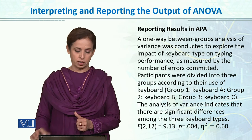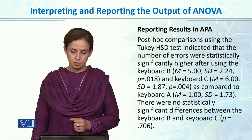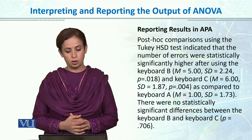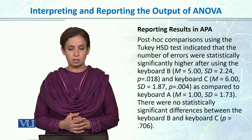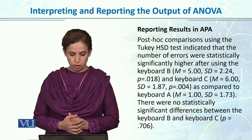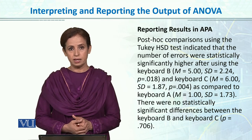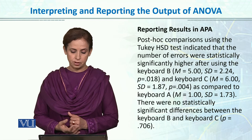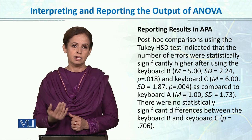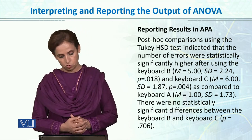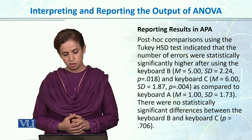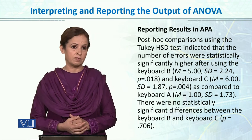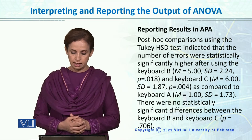This is the standard way of reporting ANOVA results, giving description as well as values. We also report that post-hoc comparison using the Tukey HSD test indicated that the number of errors was statistically significantly higher after using keyboard B (M = 5, SD = 2.24) — the letters M and SD are italicized. Both mean and standard deviation are given for keyboard B and keyboard C (M = 6, SD = 1.87), and p = 0.004, which is significant because p < 0.01. As compared to keyboard A (M = 1, SD = 1.73), there were no statistically significant differences between keyboard B and keyboard C, and you can also report that p-value.